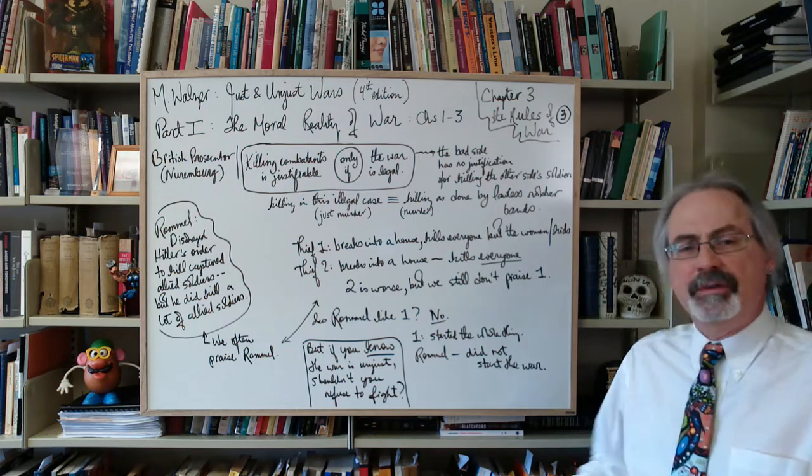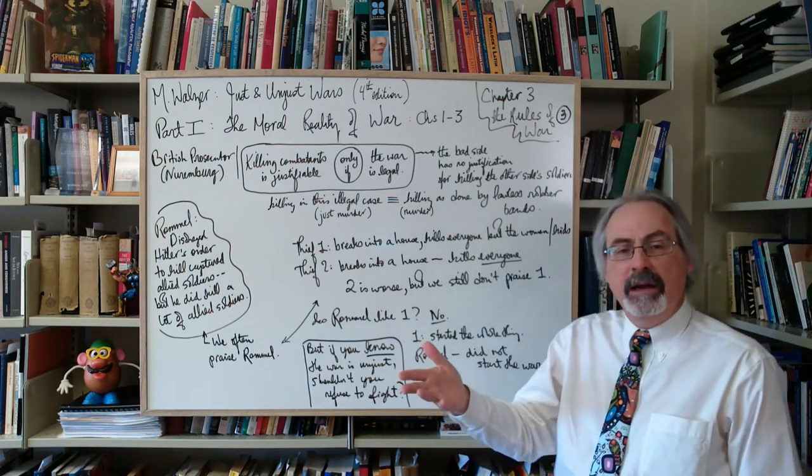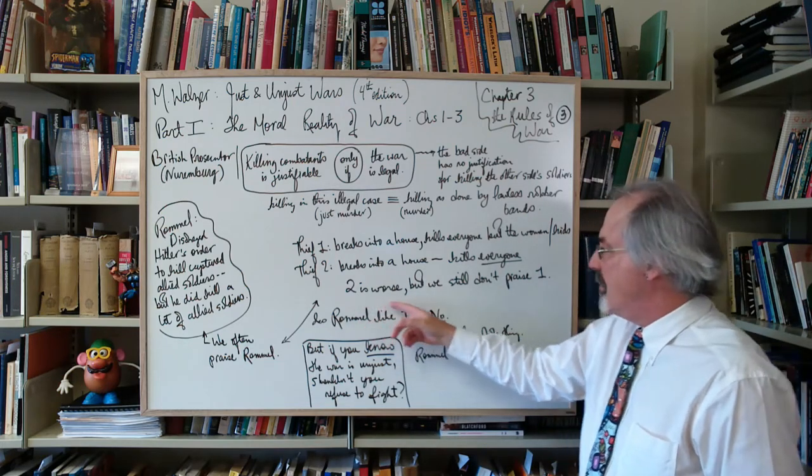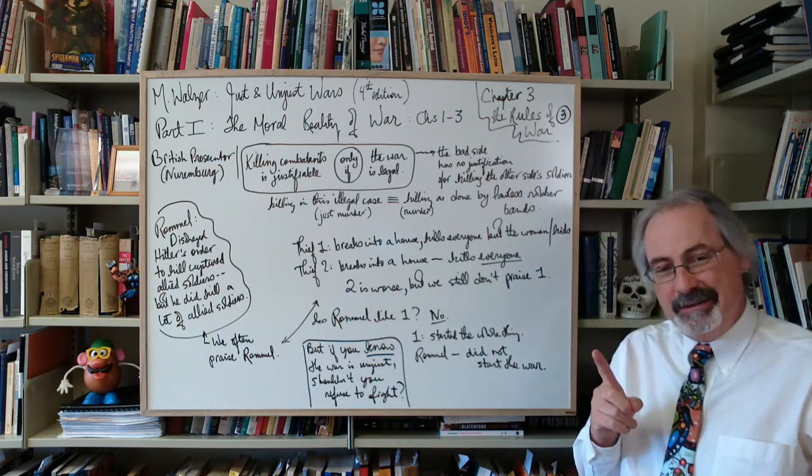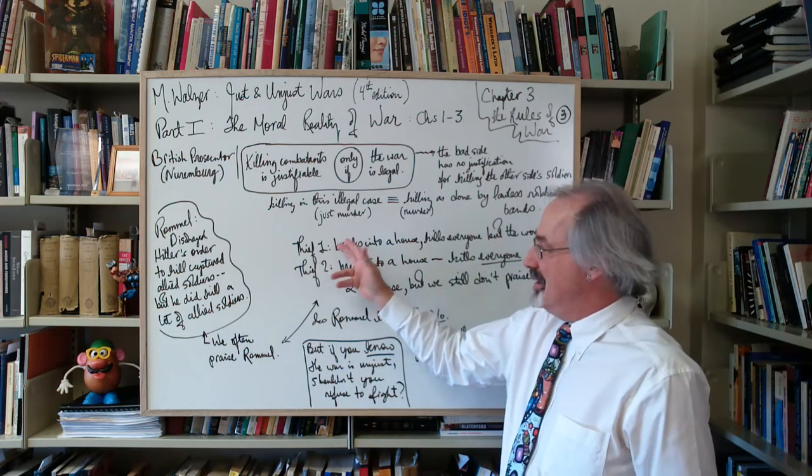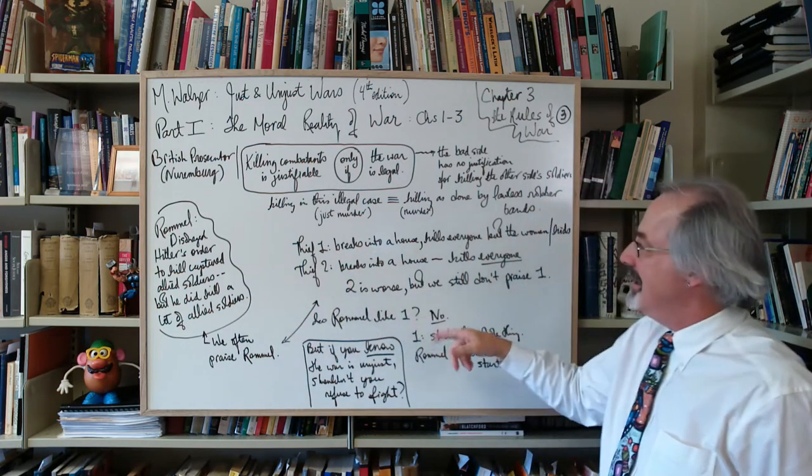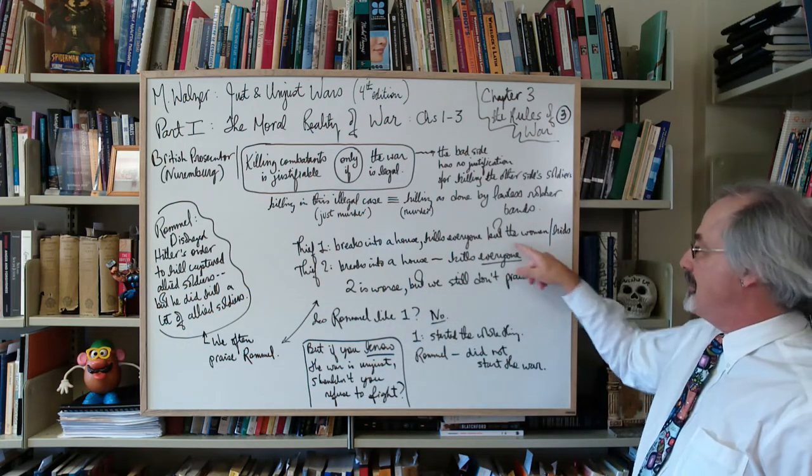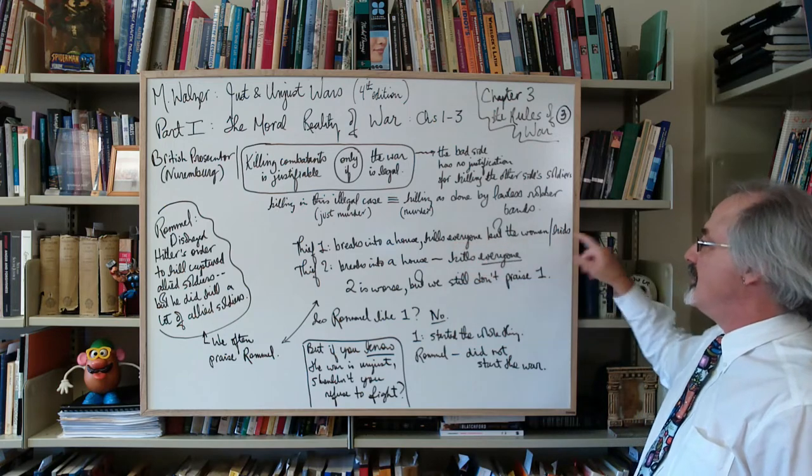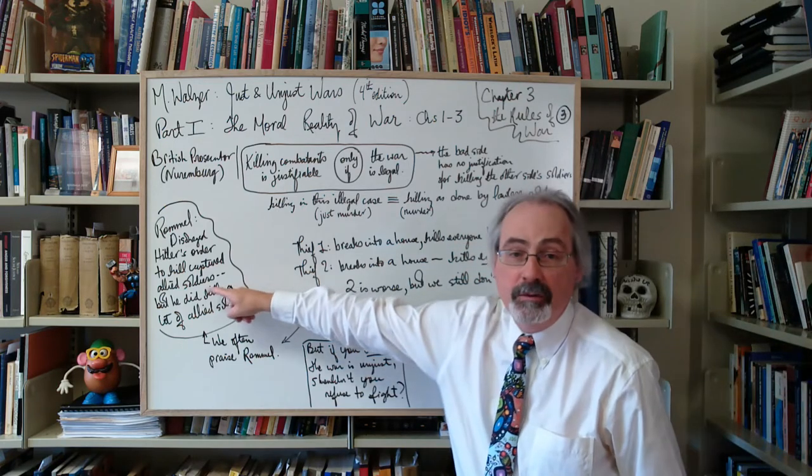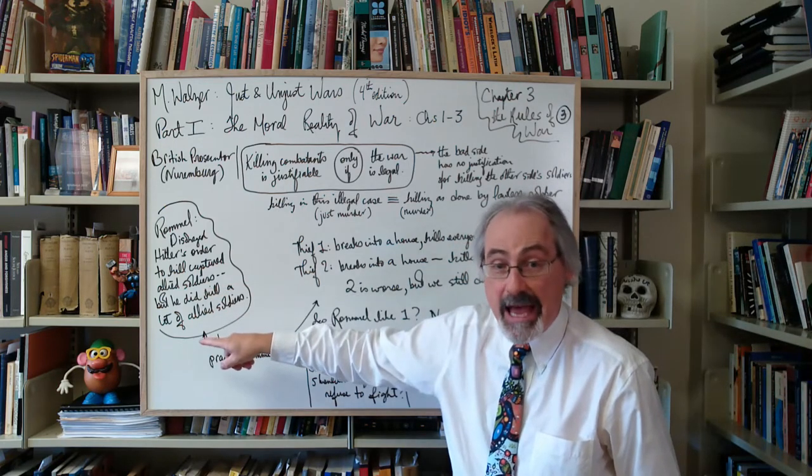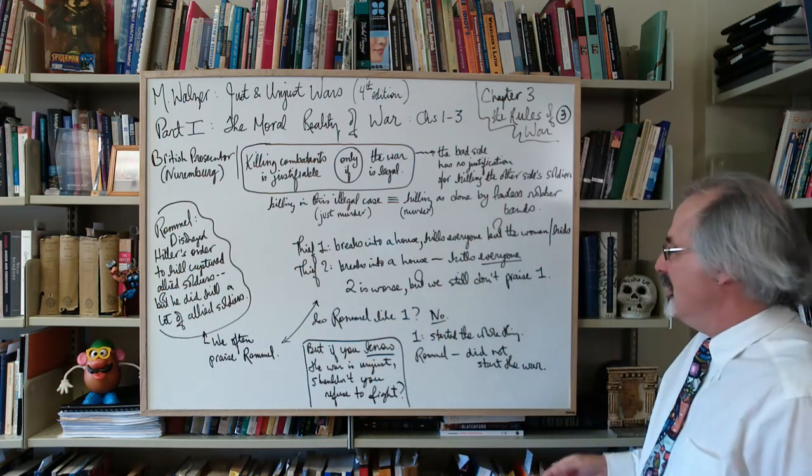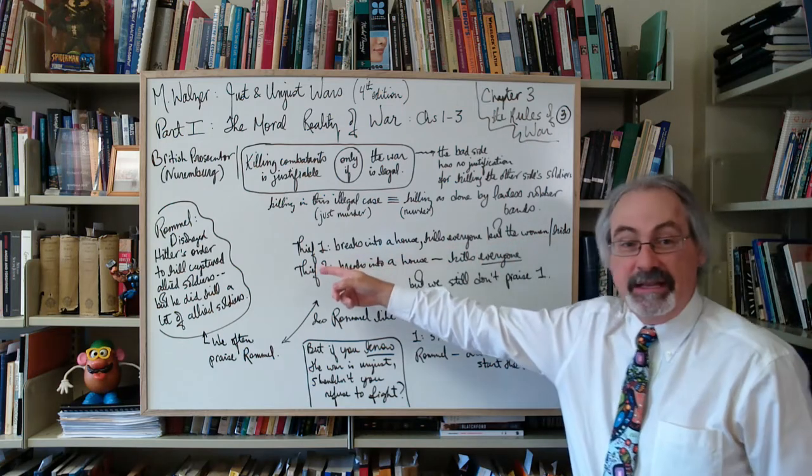Are they morally equivalent? Walzer says no. Clearly they're both immoral, but are they morally equivalent? No. The second one is worse. But on the other hand, there's a rough analogy of the first one to Rommel. Rommel does kill but doesn't kill everyone—he kills most but not the captured ones. Is Rommel like one? Well, we praise Rommel but we don't praise this one here.